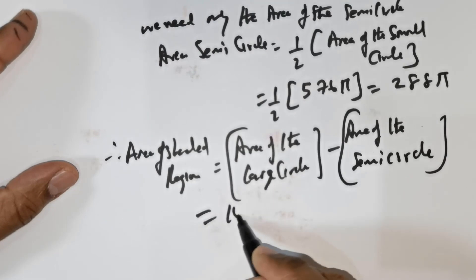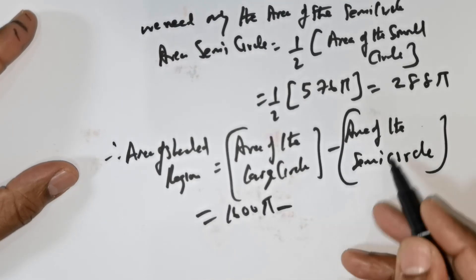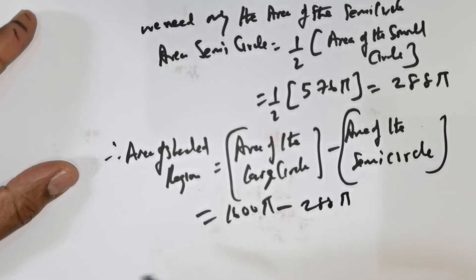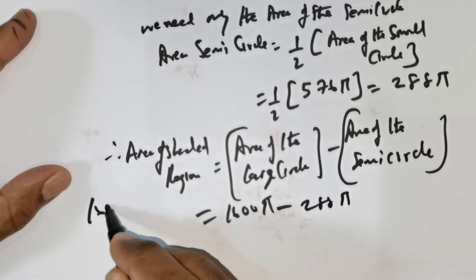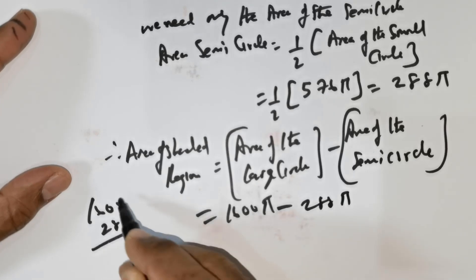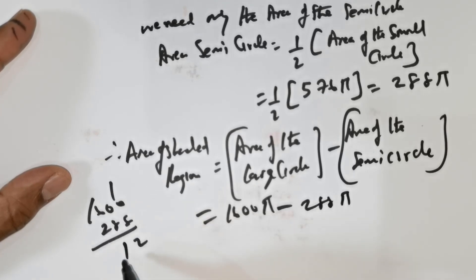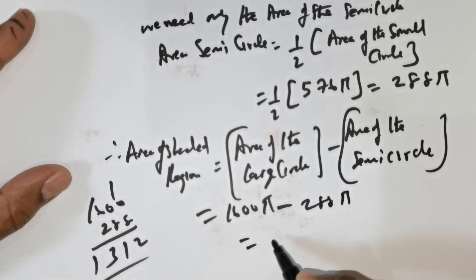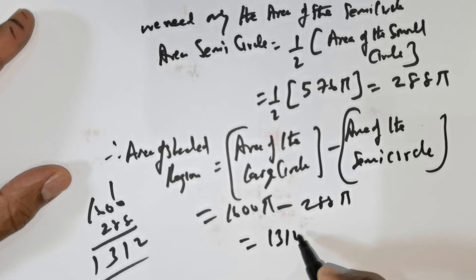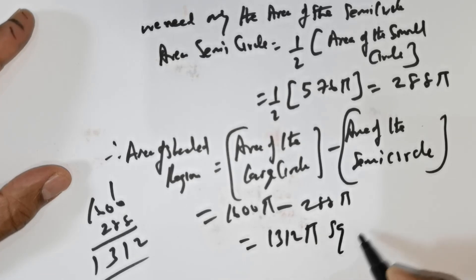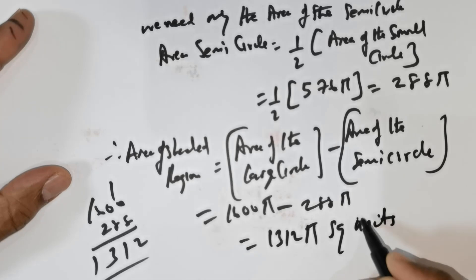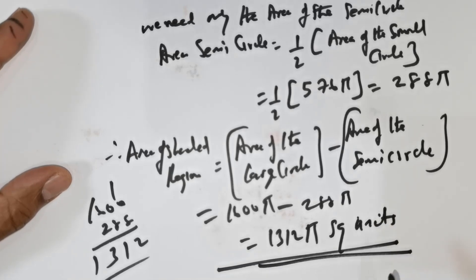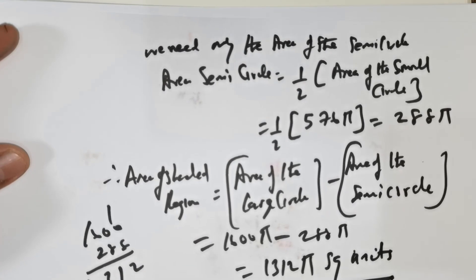So area of the large circle is 1600 pi, area of the semicircle is 288 pi. So 1600 pi minus 288 pi equals 1312 pi square units. So this is the answer. Thank you everybody. Enjoy your night.